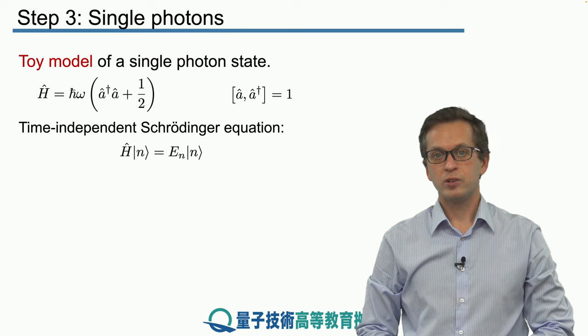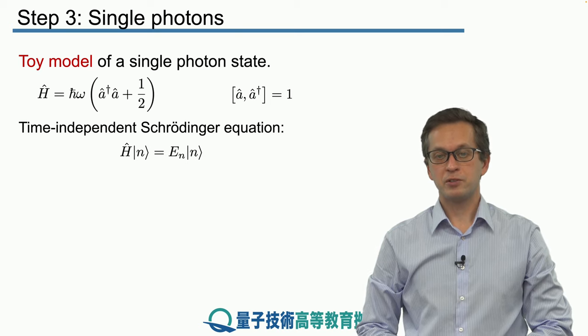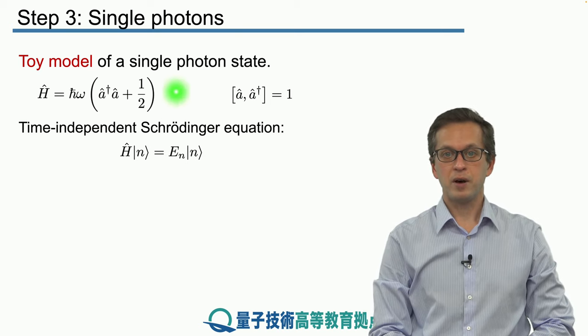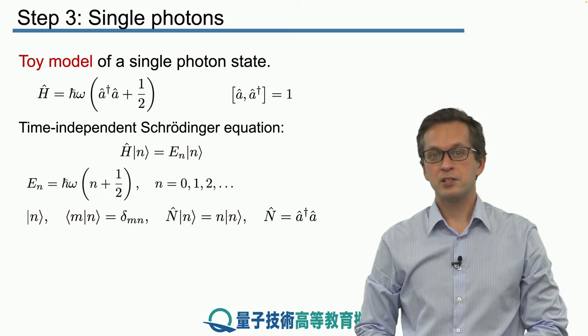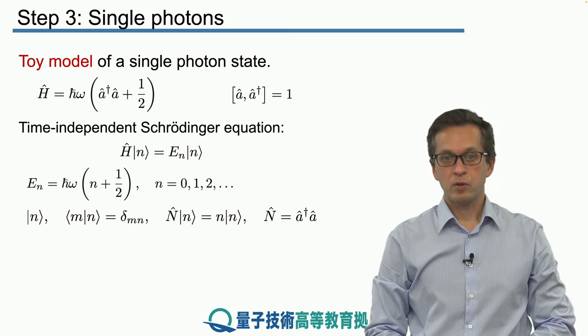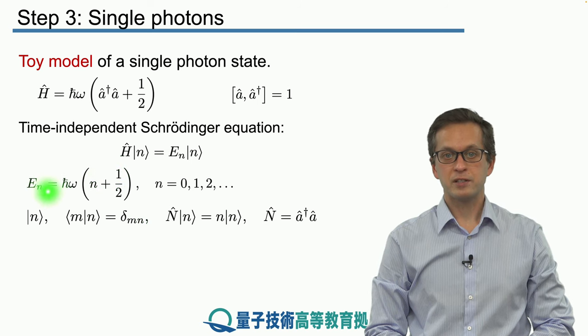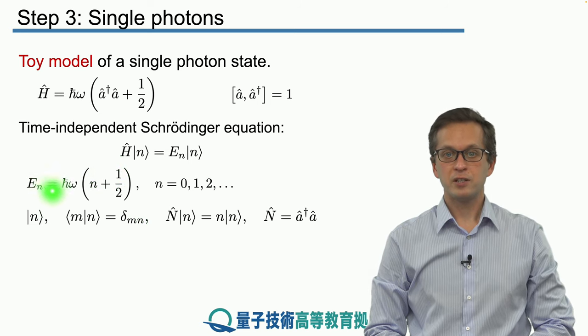And we know that by solving the time-independent Schrödinger equation given by this expression right here, we can find the eigen energies and the eigenvectors following these expressions and these properties.